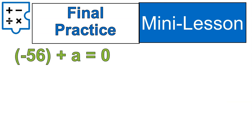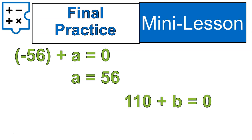For our final practice question: negative 56 plus A is equal to zero. I put the letter A in there instead of N — with a variable you can use whatever letter you want. What is the value of A? A is equal to positive 56. Next: 110 plus B is equal to zero. What's my value for B? B is equal to negative 110, because positive 110 plus negative 110 gives me zero.